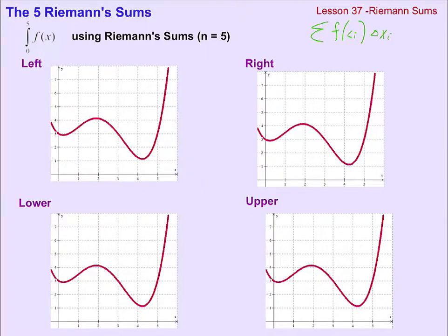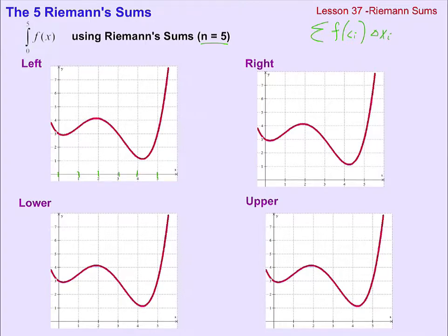The left Riemann sum and the right Riemann sum. The left Riemann sum says that within every interval of x values, you choose the x value on the leftmost piece of your interval to decide what y value to use in your product. For example, let's look at this graph and I will do a left Riemann sum. I'm told here to use five subintervals, and just to make our lives easier, I will make those five subintervals evenly spread out, so my delta x will be one no matter what.